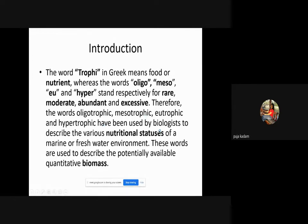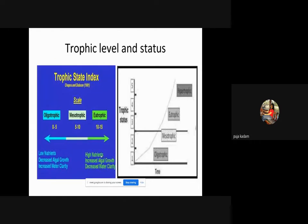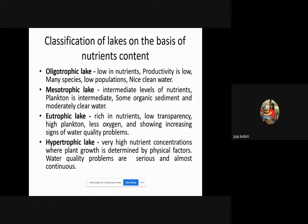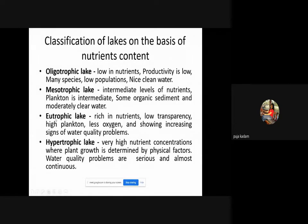The words oligotrophic, mesotrophic, eutrophic, and hypertrophic have been used by biologists to describe the various nutritional statuses of marine or freshwater environments, and they describe the potentially available biomass — that is, the amount of organisms present. On a scale of high nutrients, there is an increase in algal growth and a decrease in water clarity. An oligotrophic lake is low in nutrients, productivity is low, many species are present in low population, and it has nice clean water.